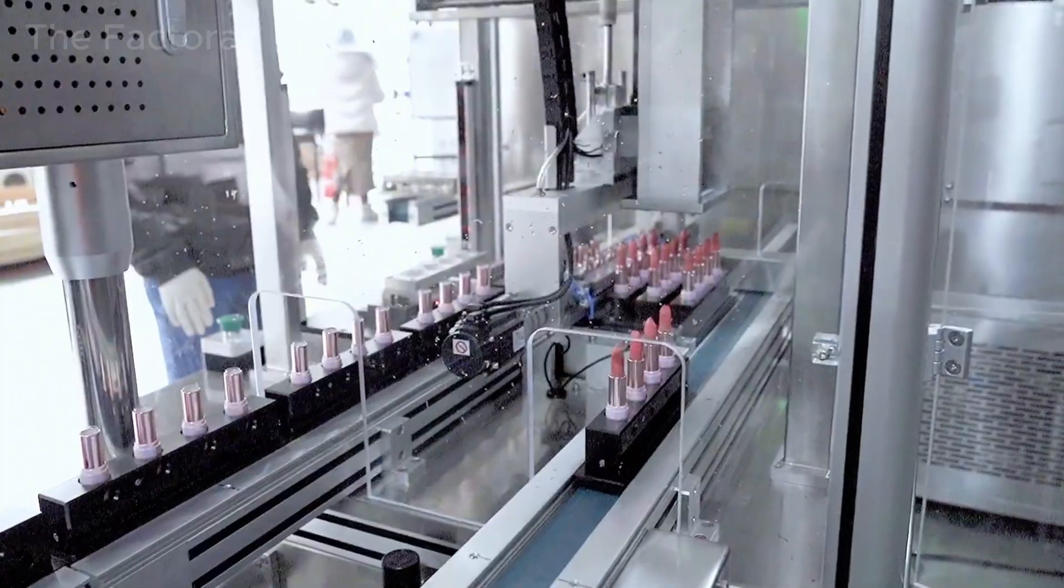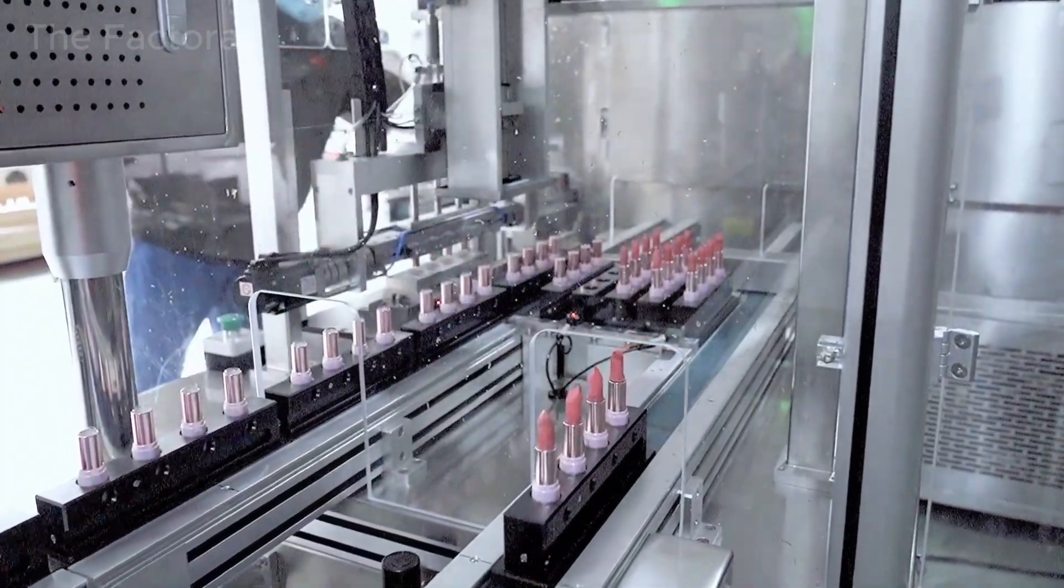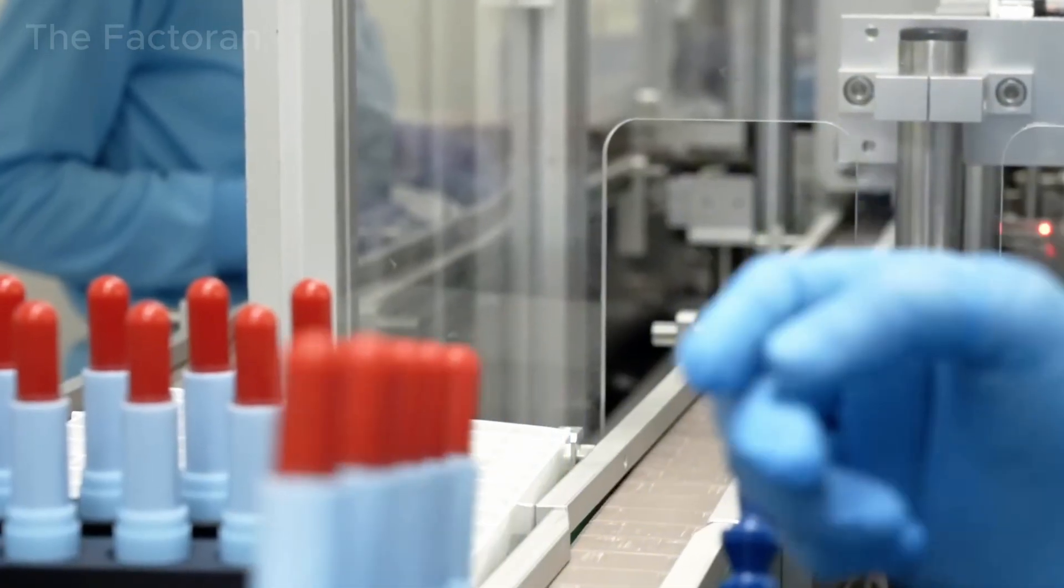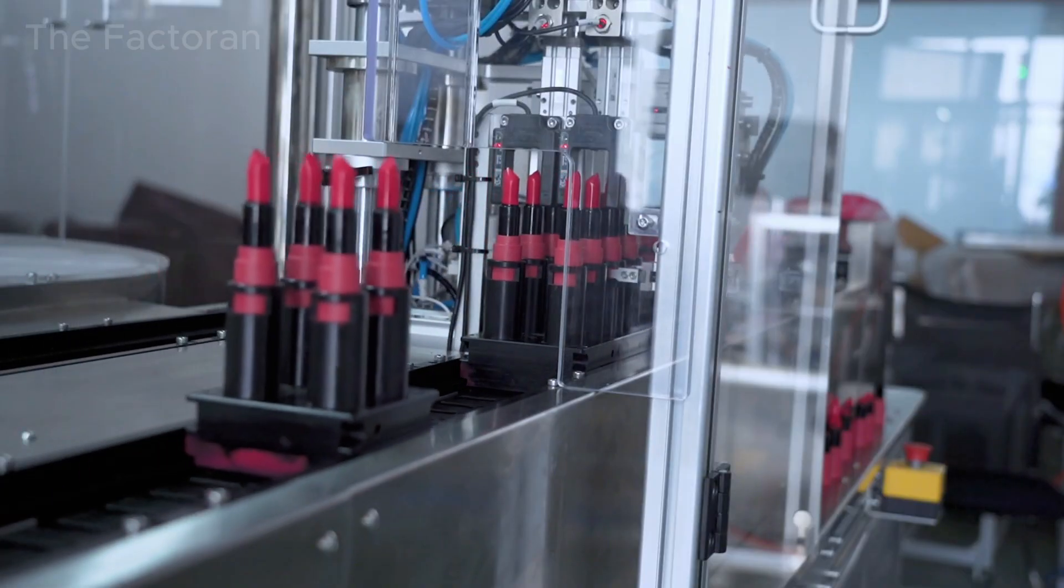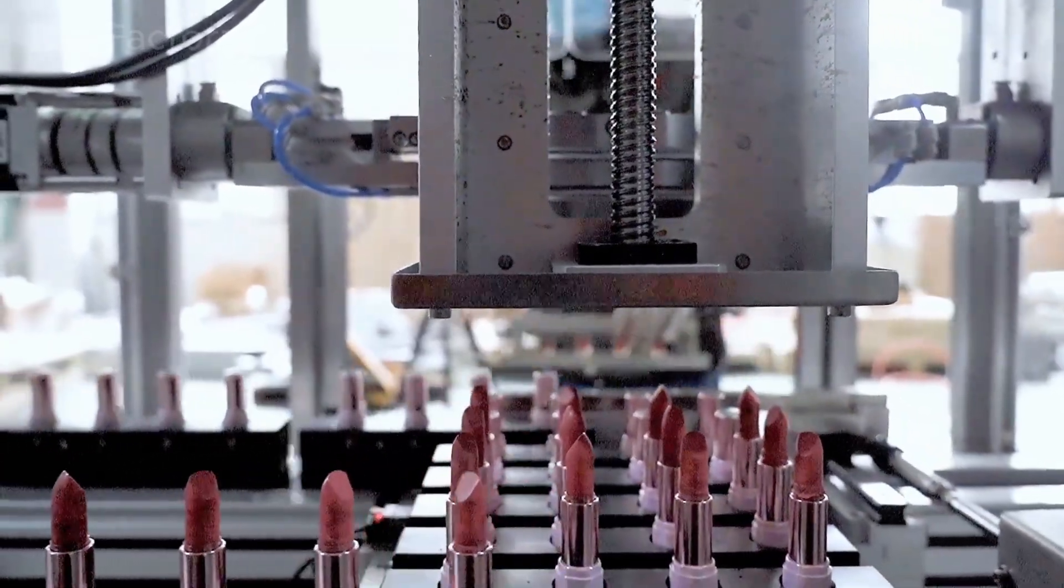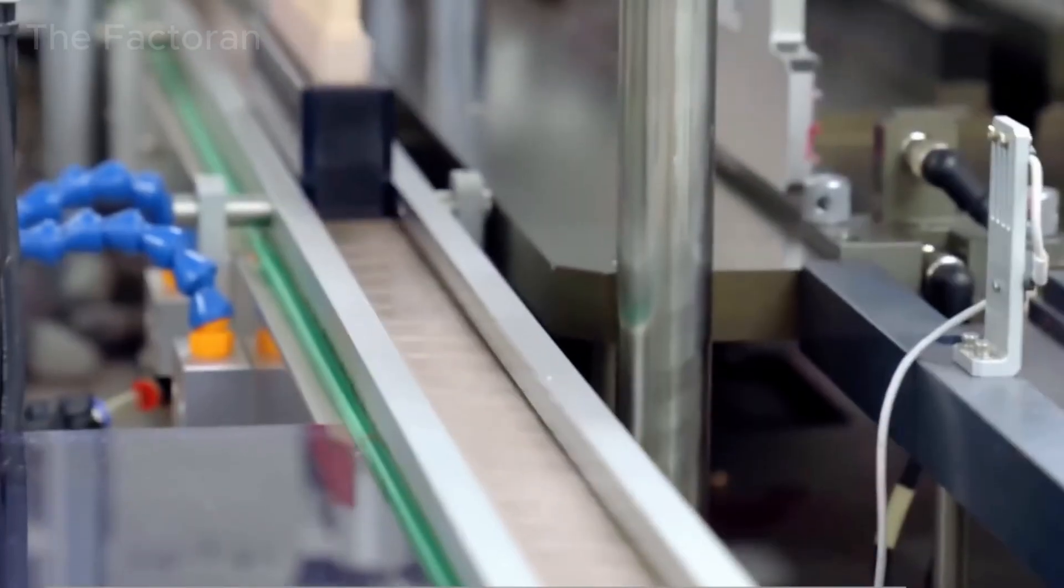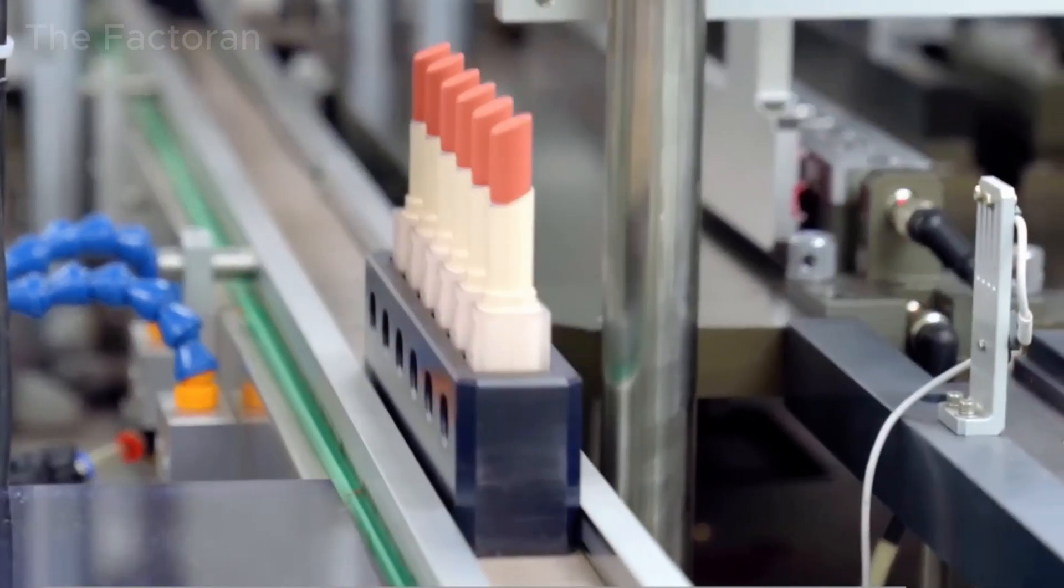On the next conveyor, the lipsticks pass through a system of thermal air guns. Precisely controlled streams of hot air gently melt the outermost surface layer of each stick. This process smooths and polishes the surface, while concealing microscopic scratches formed during earlier stages of production.